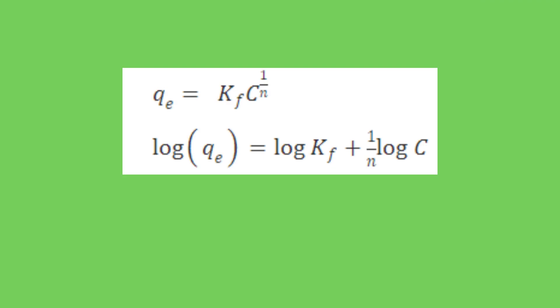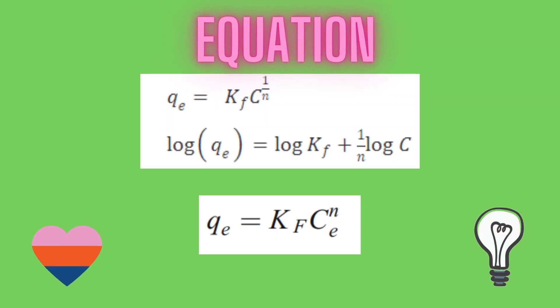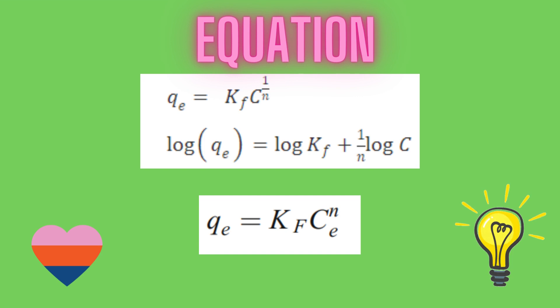Considering these assumptions, the Freundlich equation can be written in three forms: q = Kf × Ce^(1/n), and if you take the log you get the linearized form. The Freundlich equation can also be written in classical form as q = Kf × Ce^n, where qe is the amount adsorbed at equilibrium, Kf is the Freundlich constant, n is the Freundlich exponent, and Ce is the equilibrium concentration.